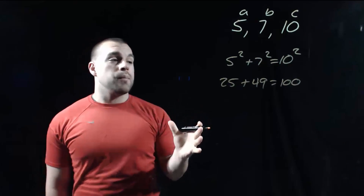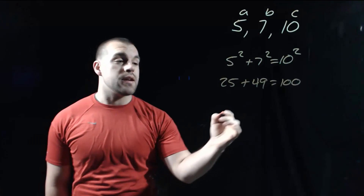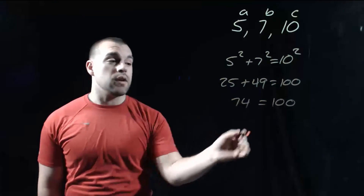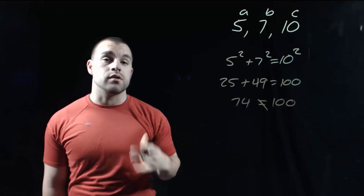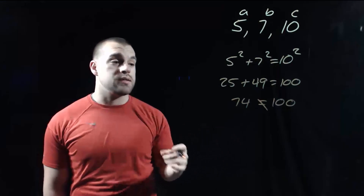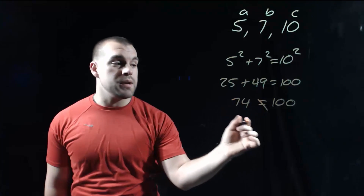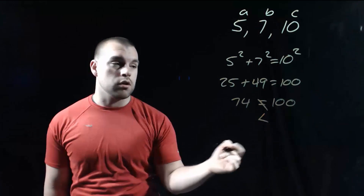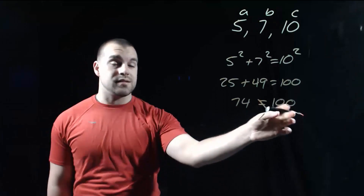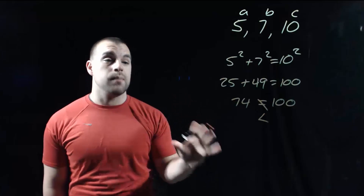Adding up the things on the left-hand side, 25 plus 49 gives us 74. Now, 74 does not equal 100, so I know this is not a right triangle. On this one, the A squared plus B squared is smaller than — less than — the C squared. So since the C squared value is a bigger number, that tells us this is an obtuse triangle.